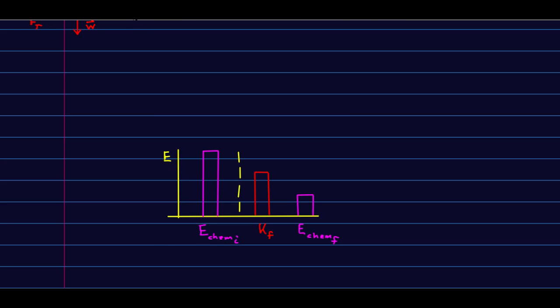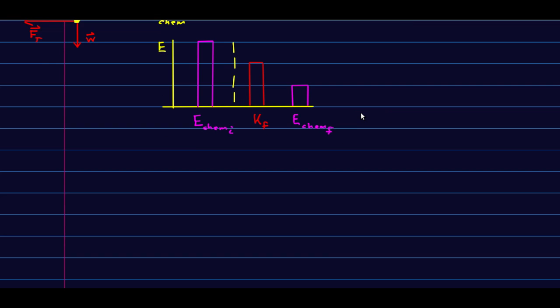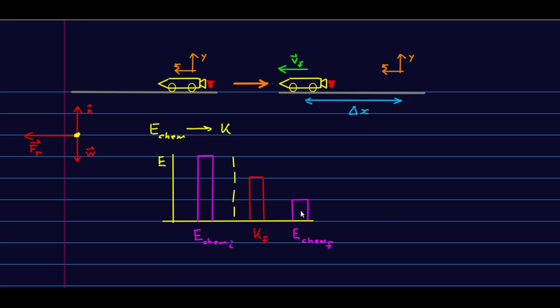And while we know how to calculate an initial and final kinetic energy in terms of velocities, or speeds more precisely, we don't know how to calculate a chemical energy. But, you know, here's what the energy bar chart looks like. We're starting with some large amount of chemical energy, and we're ending up with less chemical energy and a bunch of kinetic energy. However, what we do know is that the work done by a force that's connected with this change in chemical energy, so this will be the work done by the thrust, because that is the force connected with this chemical energy being transformed into kinetic energy, should equal the change in the chemical energy.